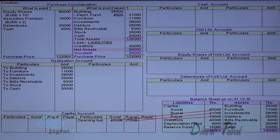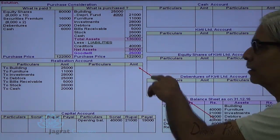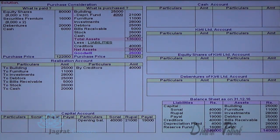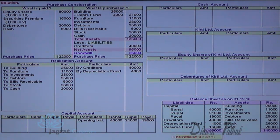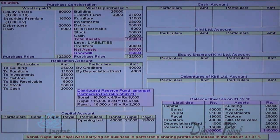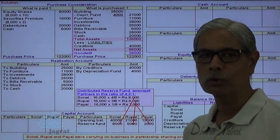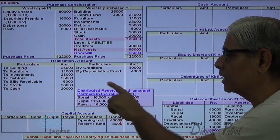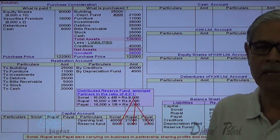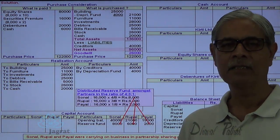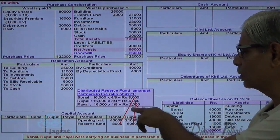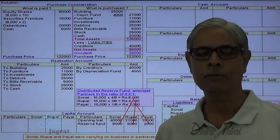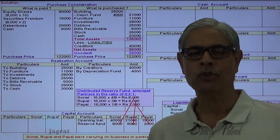Capital accounts of Sonal, Rupal and Payal are credited. Creditors and liabilities are transferred to the credit side of the realization account. The depreciation fund against building is also credited to realization account. The reserve fund of Rs. 16,000 is distributed in the profit sharing ratio of 4:3:1 — giving Sonal Rs. 8,000, Rupal Rs. 6,000, and Payal Rs. 2,000 — credited to their respective capital accounts via a general reserve account debit entry.